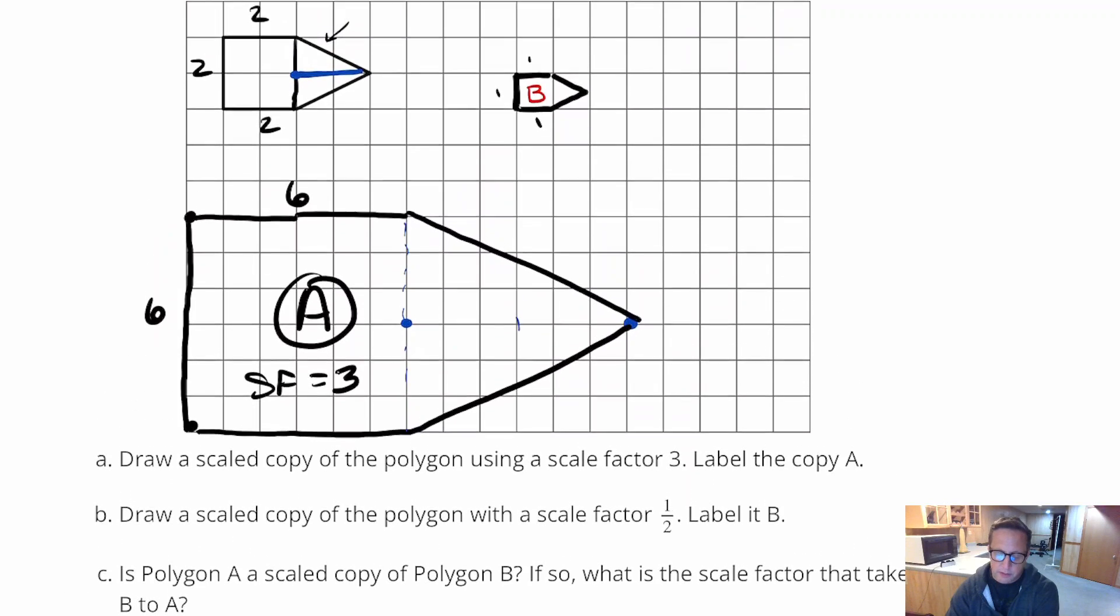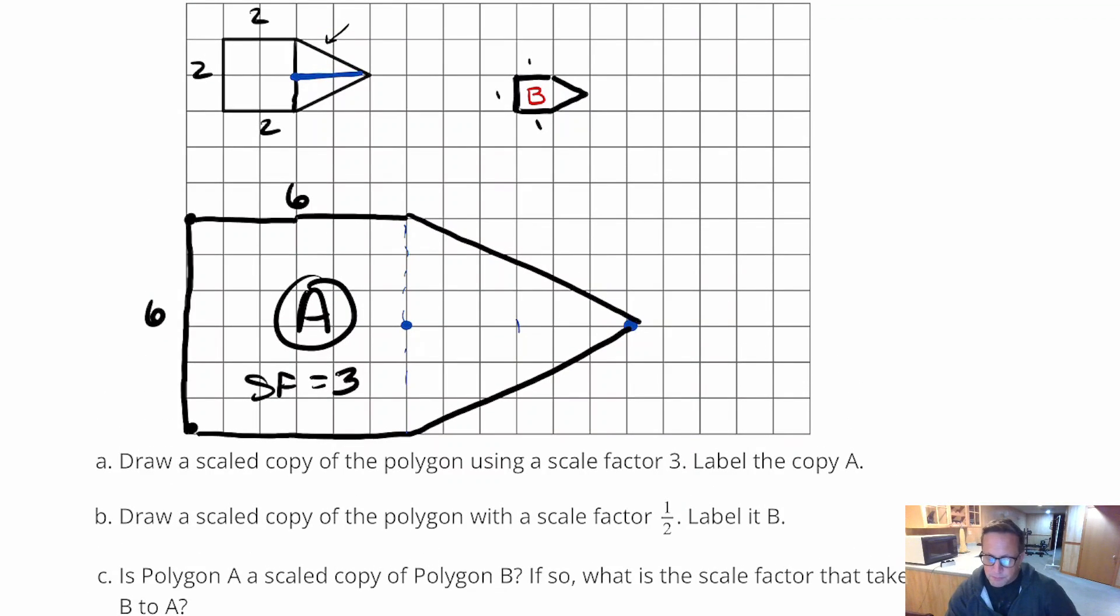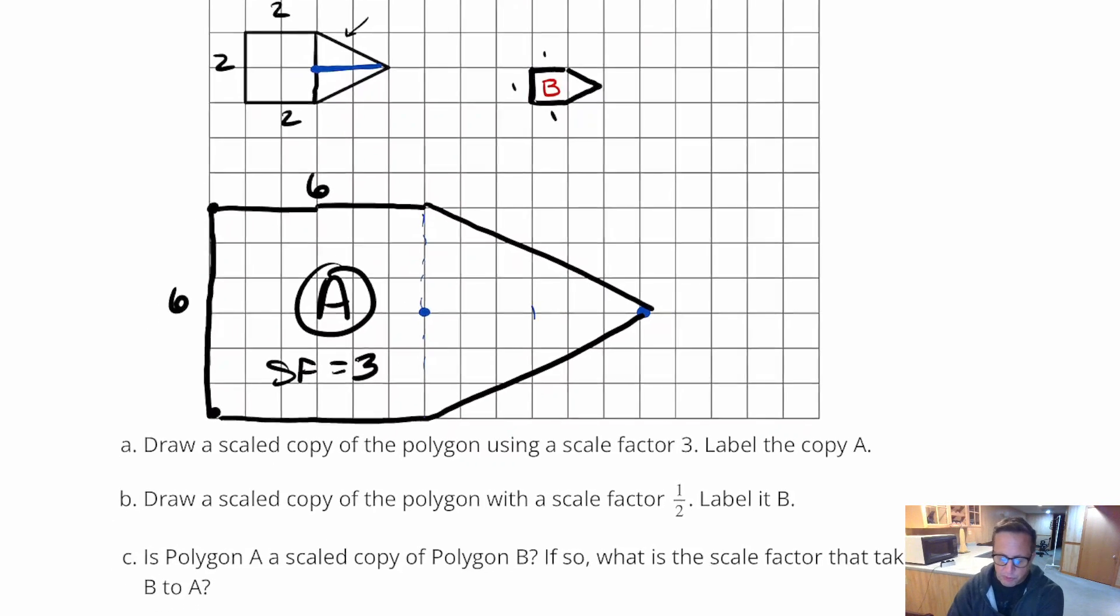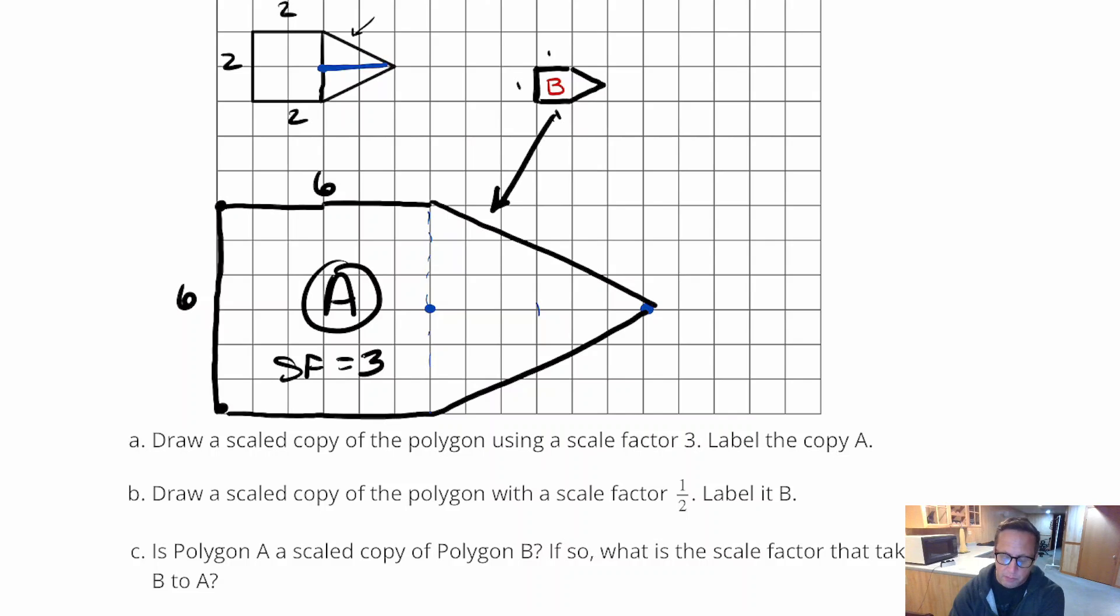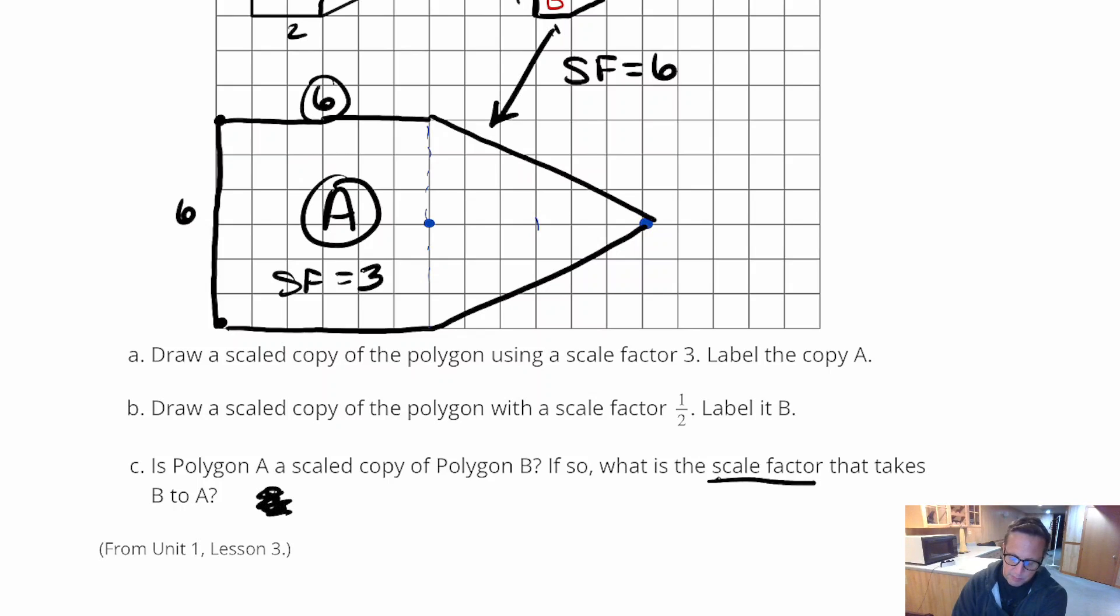What else do we got to do. Is polygon A a scaled copy of B? If so what is the scale factor that takes it from B to A? And yeah it is. It almost seems too obvious but yeah, A is a scale factor of B. B is a scale factor of A as well. Pardon me with all the noise things are just dropping. But what is the scale factor that takes it from B to A? Well B to A, well B has all just 1 this is a 6. So that is a scale factor of 6.